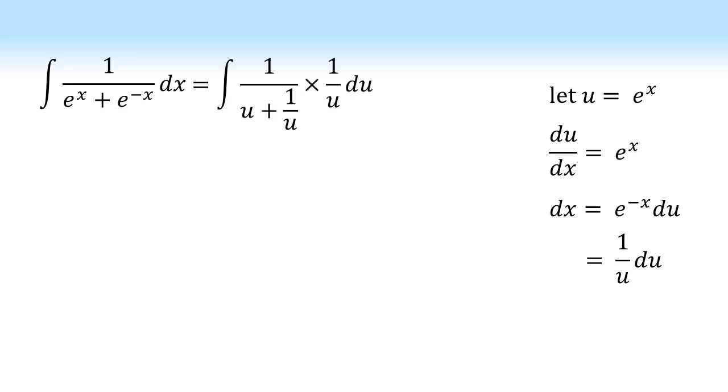We're now going to substitute our u and our dx into our integral. So we get the integral of 1 over u plus 1 over u times by 1 over u du. Bringing our two fractions together, 1 times 1 on the top and u times by the u plus 1 over u on the bottom.